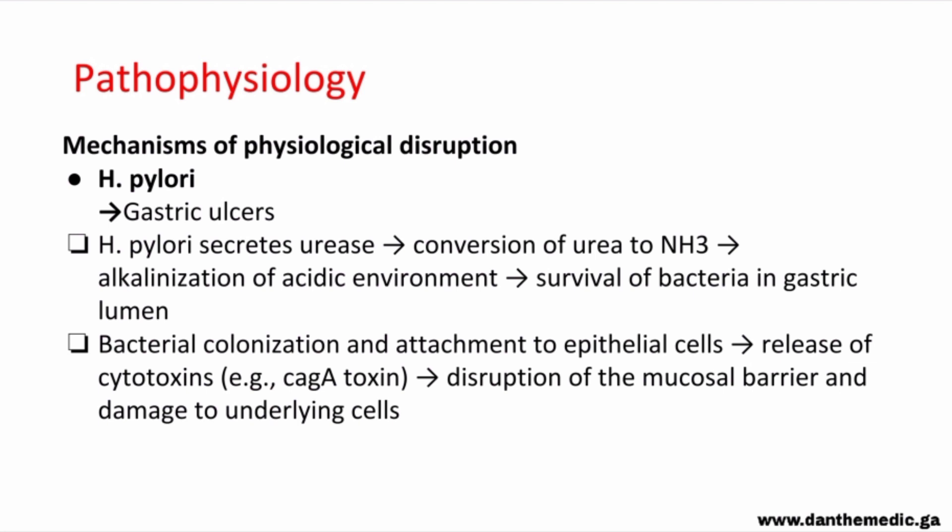Now let's talk about the mechanism of physiological disruption. H. pylori can cause both gastric and duodenal ulcers. In gastric ulcers, H. pylori secretes urease, which aids the conversion of urea to ammonia. This ammonia causes alkalinization of the acidic environment, allowing H. pylori to survive in the stomach lumen. H. pylori then colonizes and attaches to epithelial cells, releasing cytotoxins like CagA toxin, causing disruption of the mucosal barrier and damage to underlying cells.